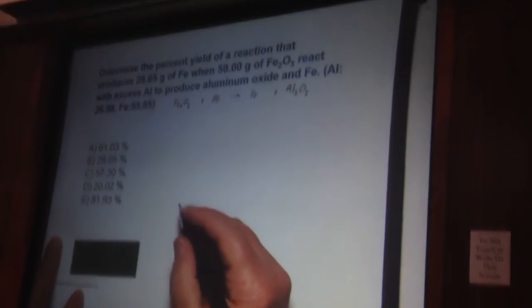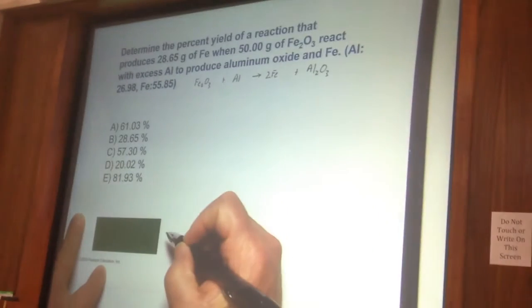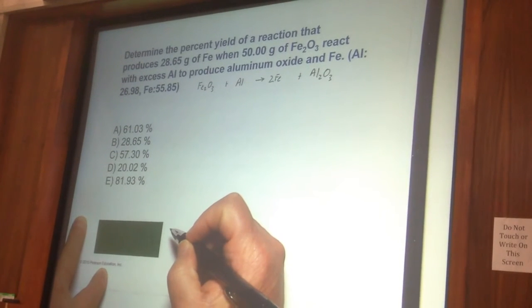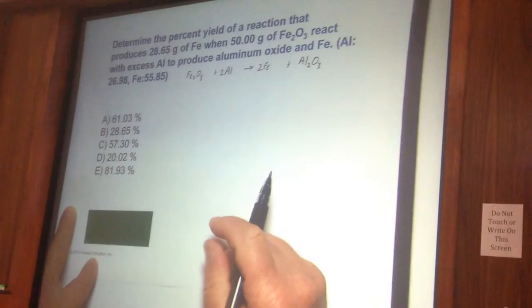That's 4 there. We're going to balance it. If we get two irons for every Fe2O3, and then we get two aluminums, that balances the equation.